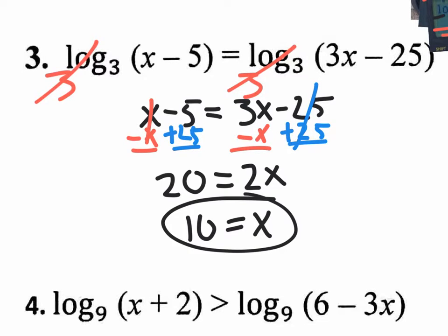Before leaving this problem, I need to make sure that when I plug it in, the inside of my logarithm is greater than 0. If it's 0, it doesn't work — it's an extraneous solution. So let's plug in 10: that's 10 minus 5, which is a positive number, so I'm good. Plugging in 10 on the other side: 30 take away 25 is 5, also a positive number. We're good.